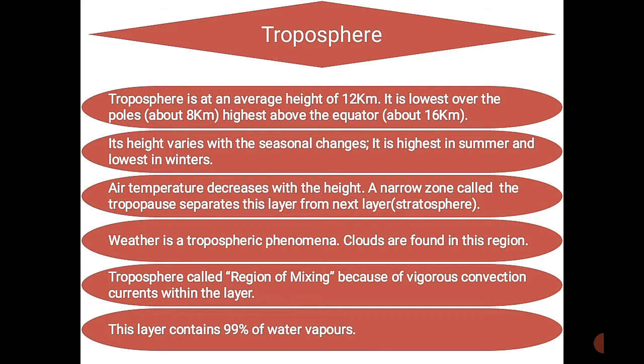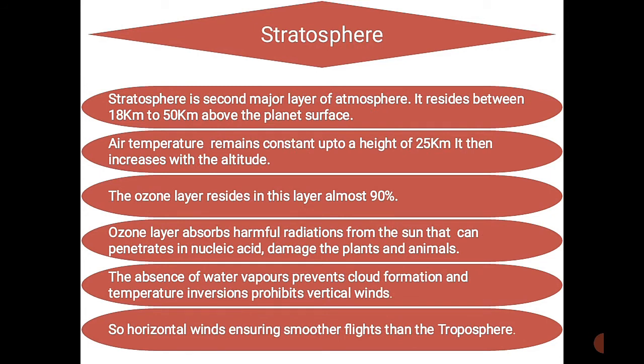The stratosphere is the second major layer of the atmosphere. It resides between 18 kilometers to 50 kilometers above the planet's surface. Air temperature remains constant up to a height of 25 kilometers, then starts to increase with altitude, reaching up to minus 2 degrees Celsius.